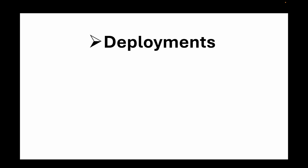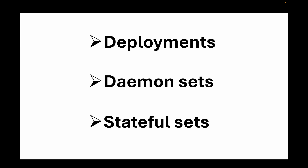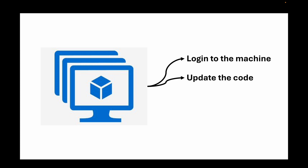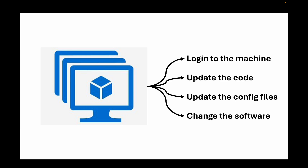We can deploy using things like deployments, daemon sets, and stateful sets that simplify this process. In a traditional sense, you might log into a virtual machine and update code or files directly — that's possible with a VM. But because pods are immutable, we always replace them with a completely new version. Whenever you update your image or configuration files, you always create a new pod, deleting the older one and replacing it.